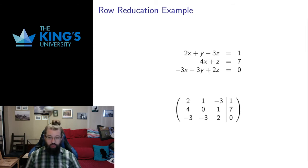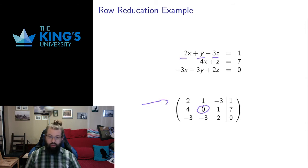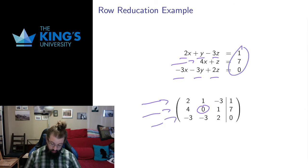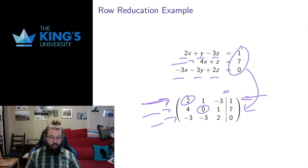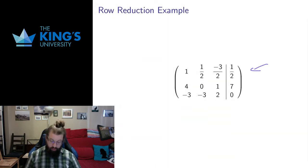Let me do another example. Here's another system in three variables that I can translate. The coefficients are 2, 1, negative 3. There's no y in the second equation, so I get a 0 for y there; otherwise 4 and 1 show up. Negative 3, negative 3, positive 2 show up in the third row. The constants come down, and the vertical line represents the equal sign. None of my rows start with a leading 1, so I have to make one — I'm going to divide the first row by 2. That gives me 1, 1 half, negative 3 halves, and 1 half. Now I need to clear the column that has the leading 1.